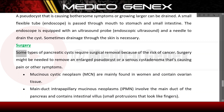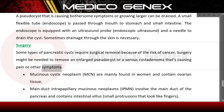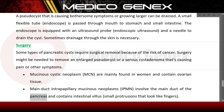Some types of pancreatic cysts require surgical removal because of the risk of cancer. Surgery might be needed to remove an enlarged pseudocyst or a serous cystadenoma causing pain or other symptoms. Mucinous cystic neoplasms (MCN) are mainly found in women and contain ovarian tissue. Main duct intraductal papillary mucinous neoplasms (IPMN) involve the main pancreatic duct and contain intestinal villi — small finger-like protrusions.